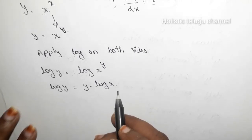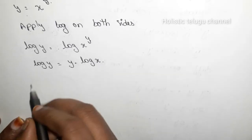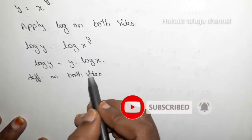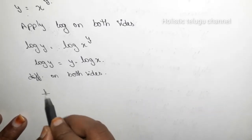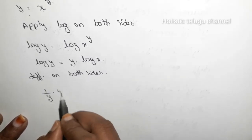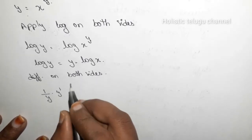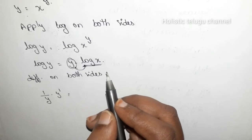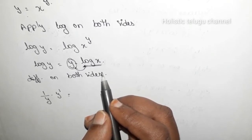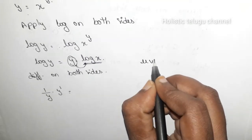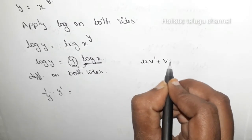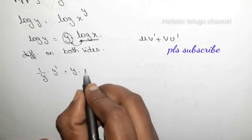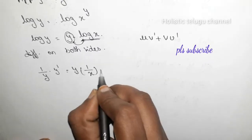Now we do the differentiation on both sides. The differentiation of log y is (1/y)·y'. On the right-hand side, we apply the UV rule. Here u = y and v = log x, so the derivative is: y · (1/x) + log x · y'.